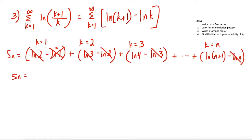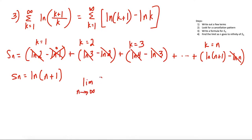The only thing left in the partial sum is the first term of the last part, which is natural log of n plus 1. So s(n) = ln(n + 1). To answer whether this series converges or diverges, we take the limit as n goes to infinity of s(n), which equals the limit as n goes to infinity of natural log of n plus 1.